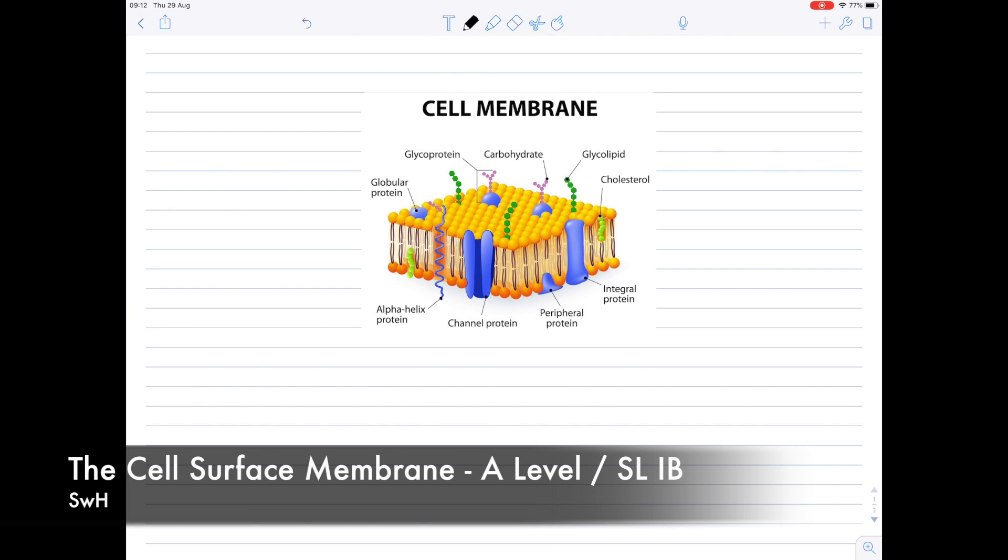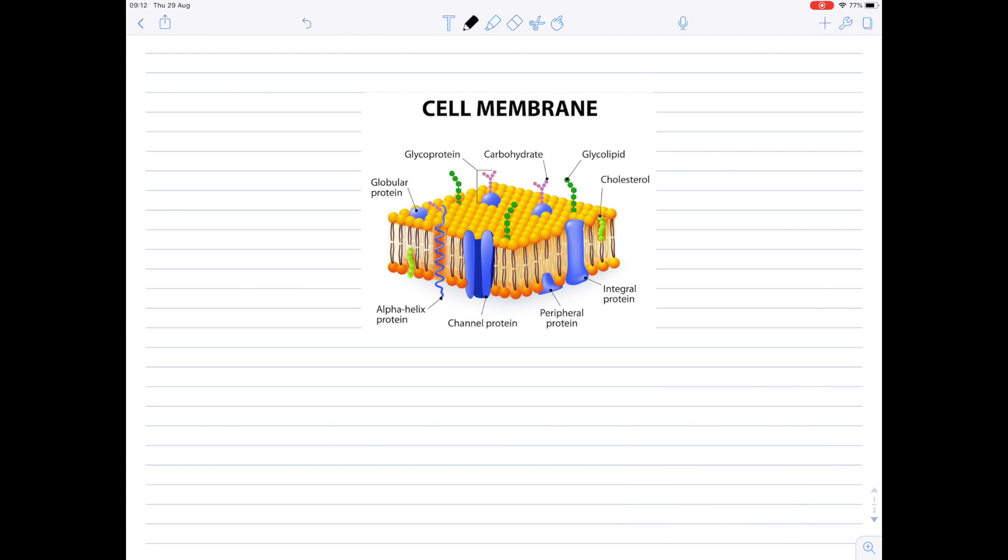In today's A-level IB video, we're going to be looking in great detail at the structure of the cell's surface membrane. I've inserted an image here so we can just look broadly at the structure. Things you really need to be aware of is the role of the cholesterol, the glycolipids, the glycoproteins, just regular proteins, and these yellow things here, which are the phospholipids.